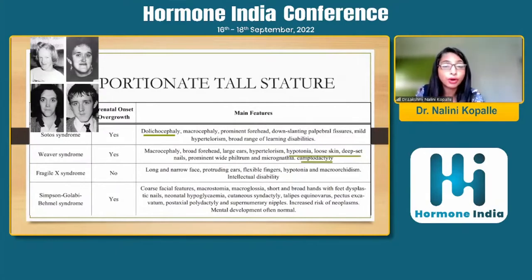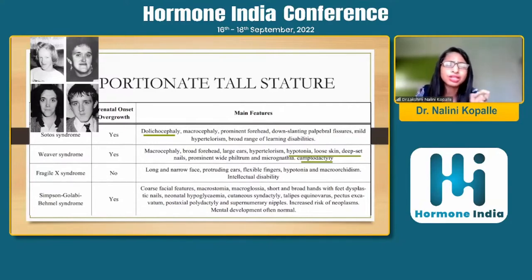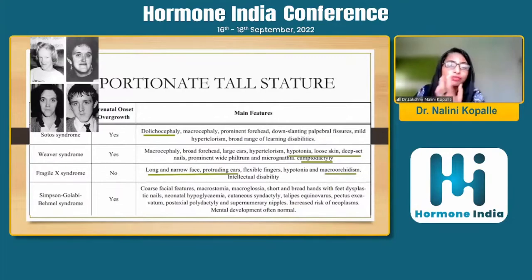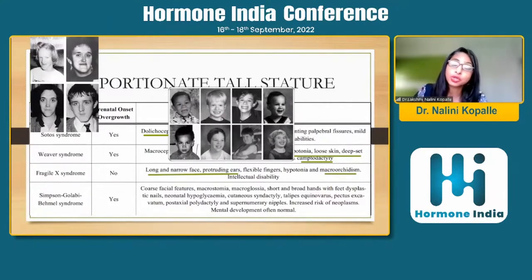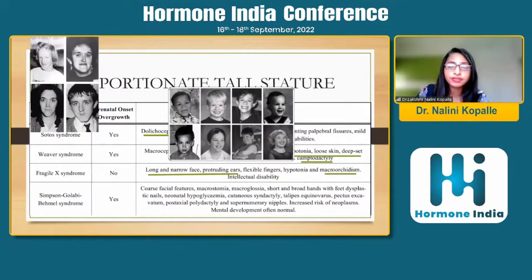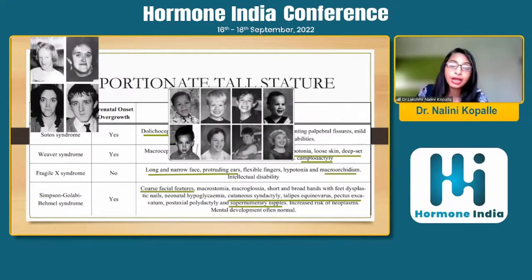Weaver's syndrome: the important features are hypotonia, loose skin, and deep-set nails with camptodactyly — that should give us a clue. Fragile X syndrome: the child is normal at birth, but you see a typical thin, long face with protruding ears. A thin face with protruding ears defines Fragile X syndrome facially, along with macroorchidism in males. Simpson-Golabi-Behmel (SGB) syndrome: the child was large at birth, with coarse facial features, cutaneous and visceral abnormalities, various bony abnormalities, talipes equinovarus, pectus excavatum, and supernumerary nipples. These features should give you the idea that you are dealing with SGB syndrome.